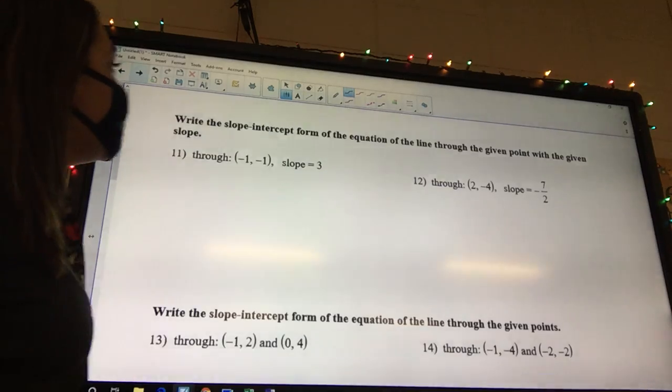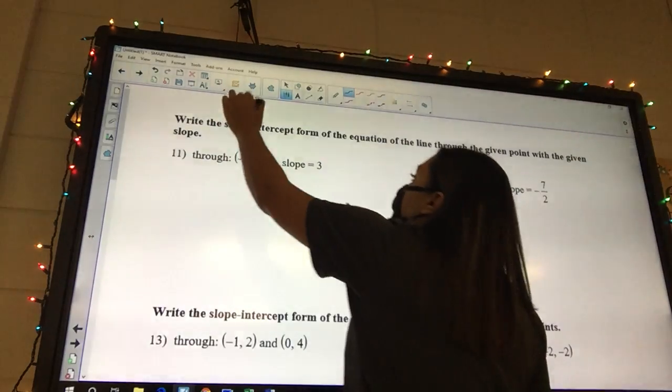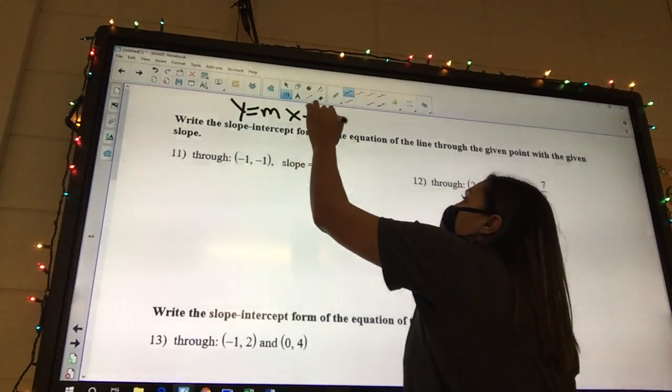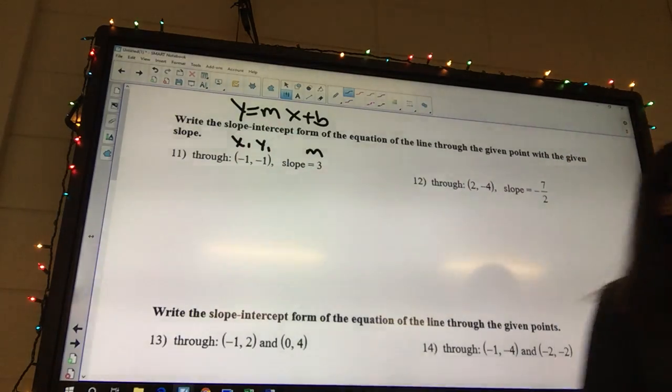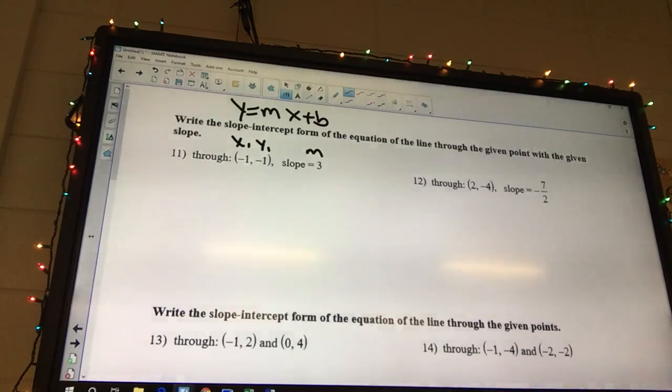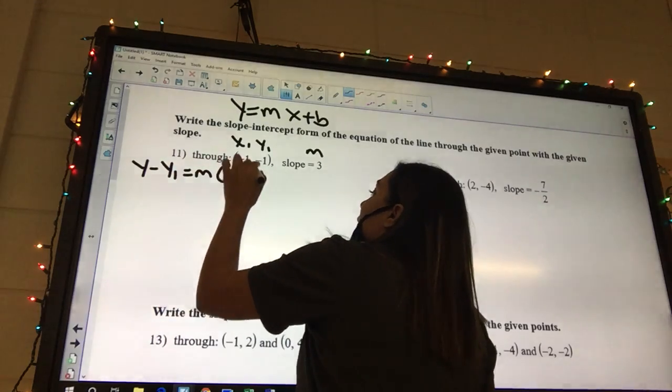Look at 11. It says write the slope intercept form. What slope intercept form? Y equals mx plus b. Y equals mx plus b. So this is what we need our answer to look like. Now let's look at what we've got. Well, I've got a point and I've got a slope. So what formula am I going to use? Listen to what I said. I have a point and I have a slope. What formula am I going to use? Point slope. Point slope. So we got y minus y1 equals mx minus x1.